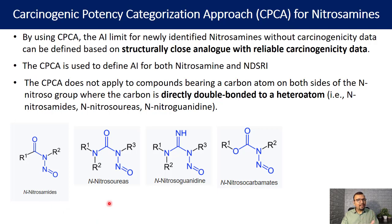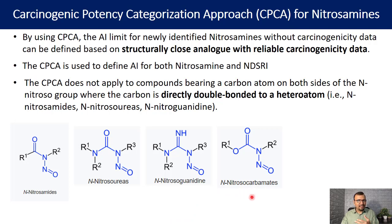The same is the case for N-nitrosoureas. You can see that the alpha carbon is again connected to oxygen via a double bond, so nitrosourea is also excluded from the CPCA. The same applies to guanidines and nitrosocarbamides. In summary, any double-bonded heteroatom connected to the alpha carbon is excluded from the Carcinogenic Potency Categorization Approach.